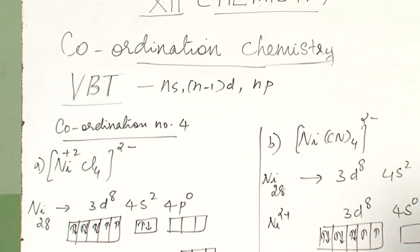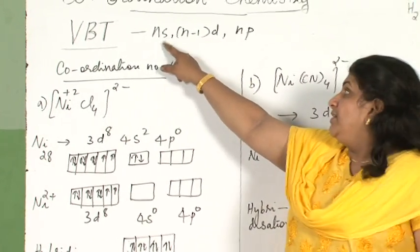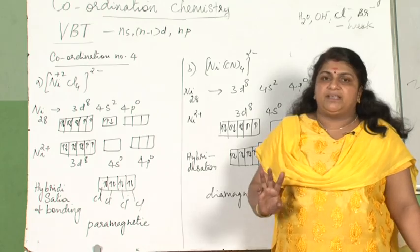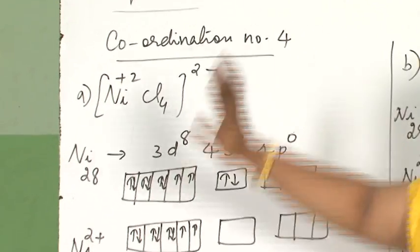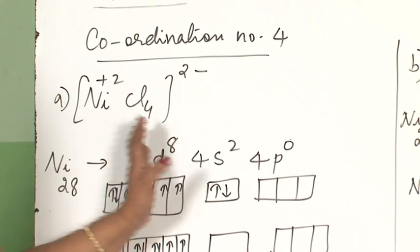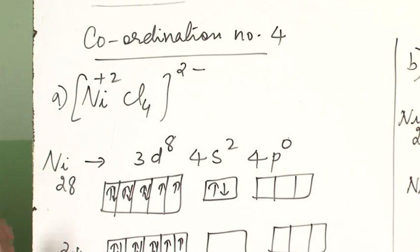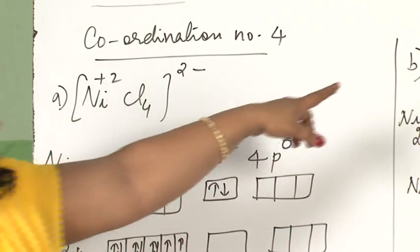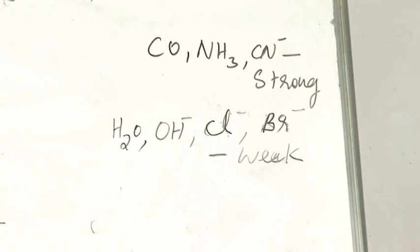Valence bond theory explains how complexes are formed when a ligand combines with a central metal ion. The ligand uses its lone pair; the metal uses ns, (n-1)d, and np orbitals for hybridization. We now discuss complexes with coordination number 4. Ligands are categorized as strong or weak based on their field strength. Chloride is a weak ligand; cyanide, carbon monoxide, and ammonia are strong ligands. Water, OH⁻, Cl⁻, and Br⁻ are weak ligands.